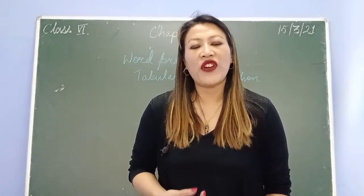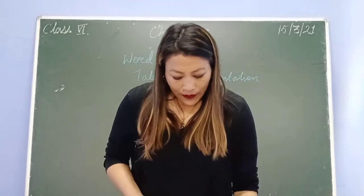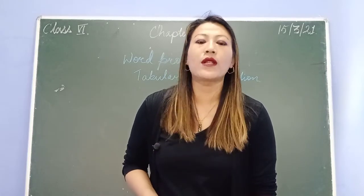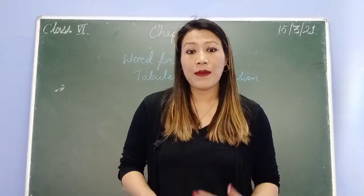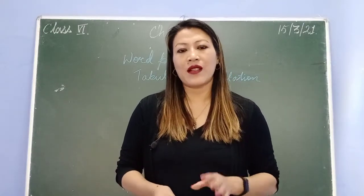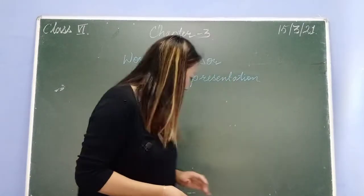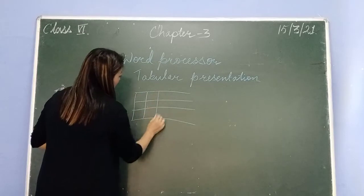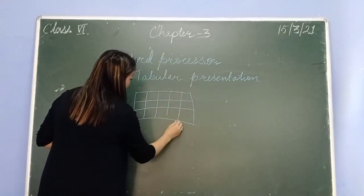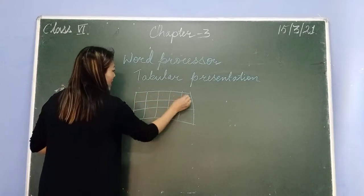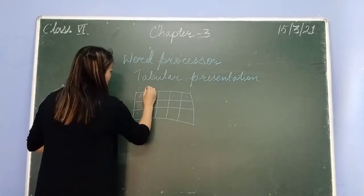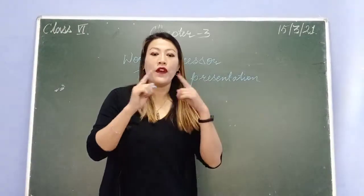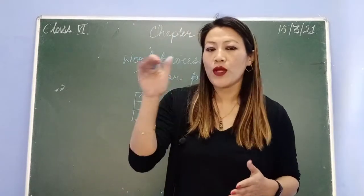When working in Microsoft Word, we need a table — it is a very important feature. A table is an organized presentation of data, segregated among various numbers of rows and columns. A table consists of rows and columns. Each of the individual boxes in a table is known as a cell.